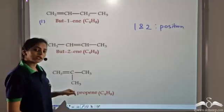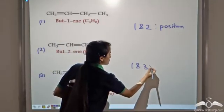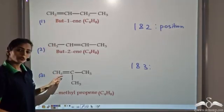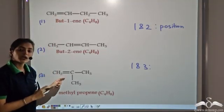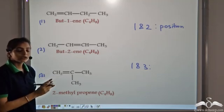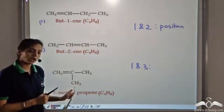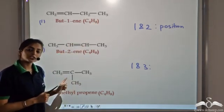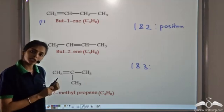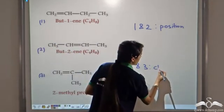Comparing structures one and three, the position of the double bond remains the same — the functional group is at the same position. However, there is a difference in the arrangement of the carbon atoms in the straight or branched chain. Since there is no difference in the position of the functional group but there is a difference in the carbon chain arrangement, structures one and three are chain isomers.